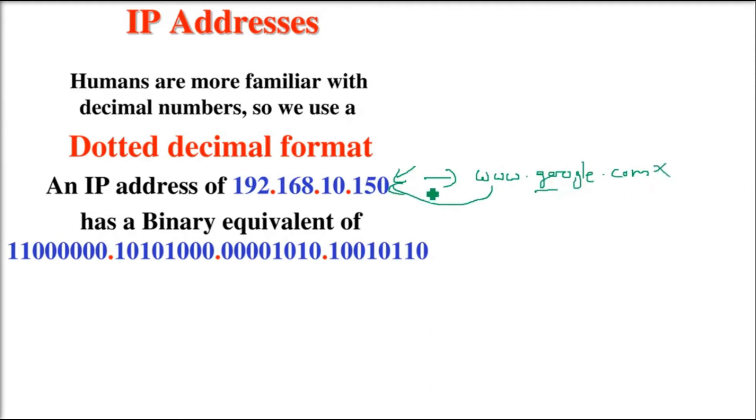There is a number associated with each node, each point, each computer. This number is known to the world network and is called the IP address. We can convert this to binary equivalent. For example, 192.168.10.150 is dotted decimal format. We know names, but computers know IP addresses.